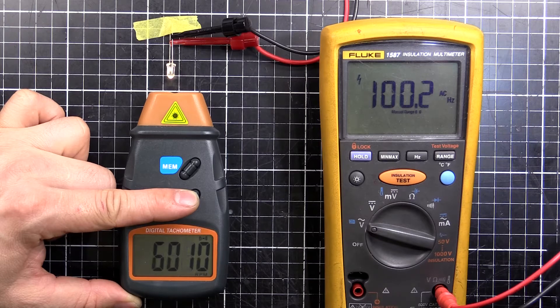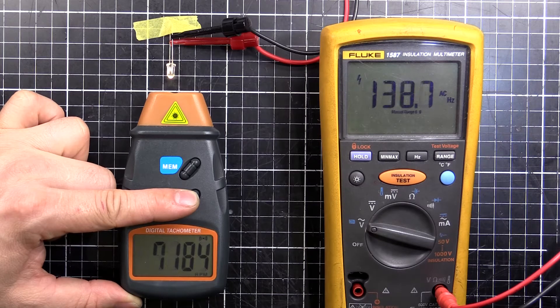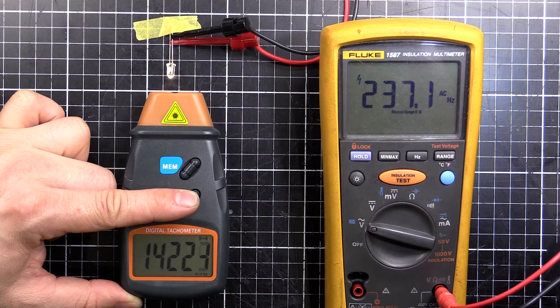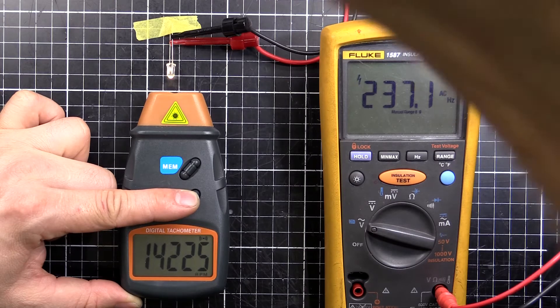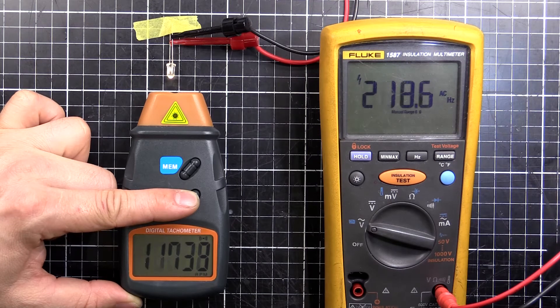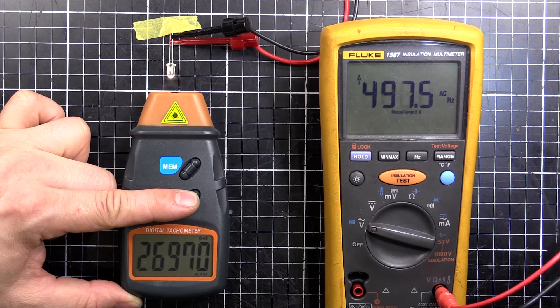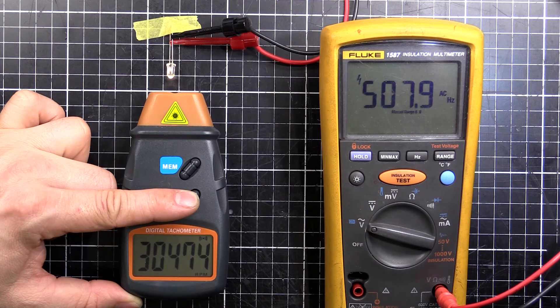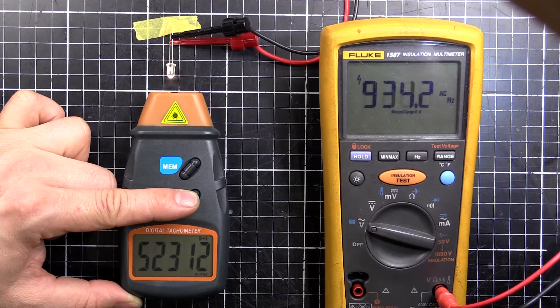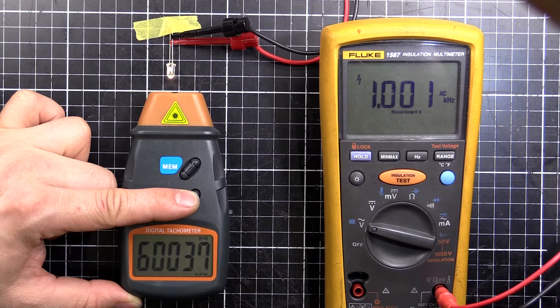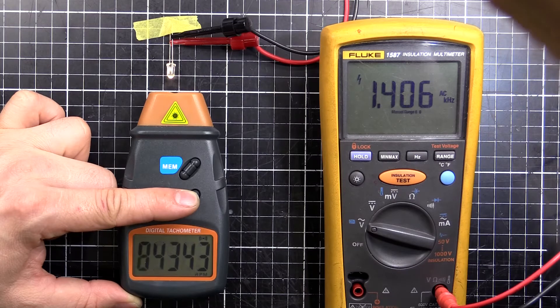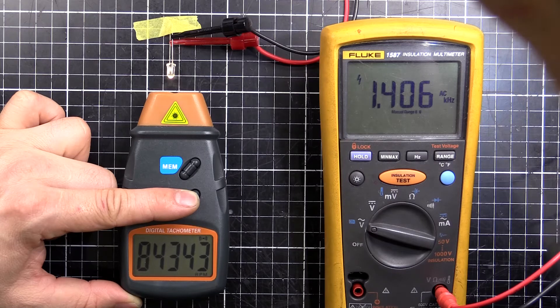Cranking it right up, you've got 100 Hertz and that's 6000 rpm like we just saw before. Now we are right up at 237 Hertz, 14,000 rpm. All right, I'll go to the next range. 500 Hertz, that's 30,000 rpm. It's getting pretty quick. 1 kilohertz, 60,000 rpm.